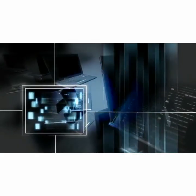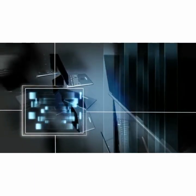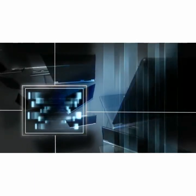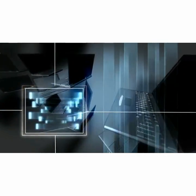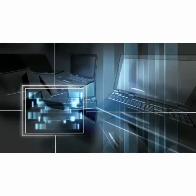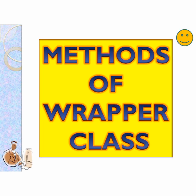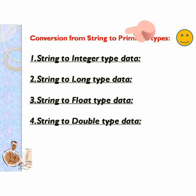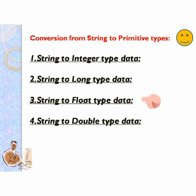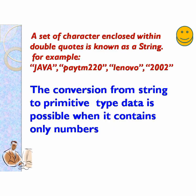Hello everyone, this is Sir Manoj, welcome to computer class. Today we will discuss wrapper class methods — how to convert string to primitive type. We'll cover conversion from string to integer type, string to long type, string to float type, and string to double type. These int, long, float, and double are primitive types.